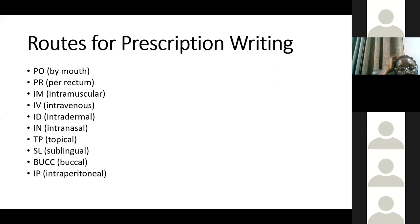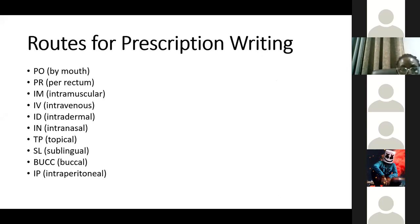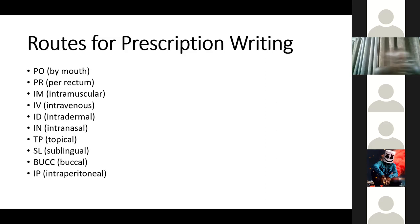Rules for prescription writing include route abbreviations: PO (by mouth), PR (per rectum), IM (intramuscular), IV (intravenous), ID (intradermal), IN (intranasal), TP (topical), SL (sublingual), BUCC (buccal), and IP (intraperitoneal). Sublingual means the medication is put under the tongue, whereas buccal means it is placed in the mouth and absorbed into the oral mucosa — these are two different routes of administration.